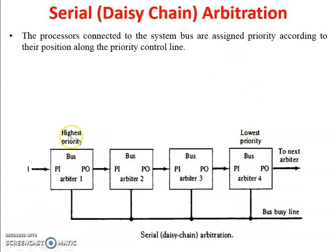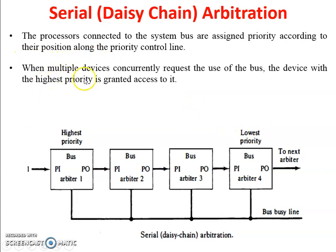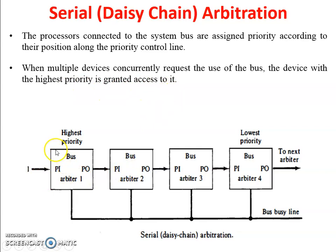When multiple devices concurrently request the use of the bus — for example, arbiter one and arbiter two both request access to the system bus at the same time — the device with the highest priority is granted access. This means arbiter one gets access to the system bus because it has the highest priority compared to arbiter two.